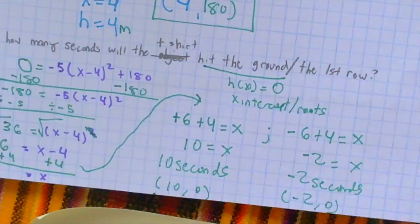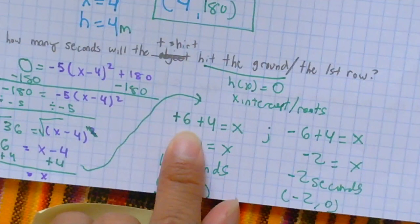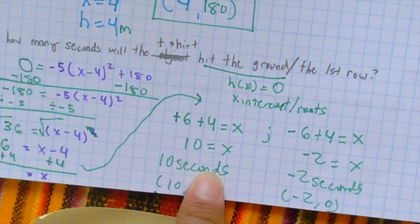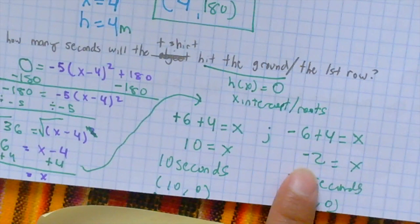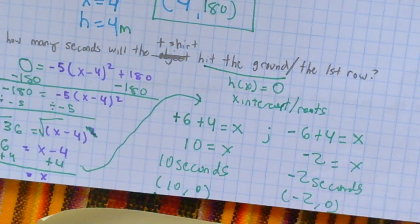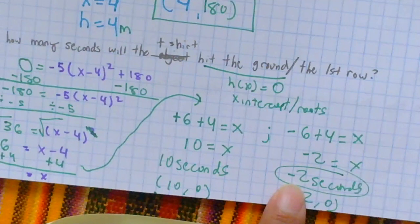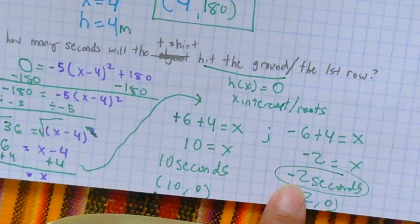So, that's what we did. Positive 6 plus 4 equals x, in which 10 equals x, so there's 10 seconds from which the t-shirt hit the ground, or the first row, in which we have now the point (10, 0). But also, negative 6 plus 4 equals x, in which we get negative 2 equals x, so that's negative 2 seconds or the point (-2, 0). Technically, this is correct, but in the context, we can never have negative 2 seconds, so just like yesterday, this is an extraneous solution. It is a false solution.